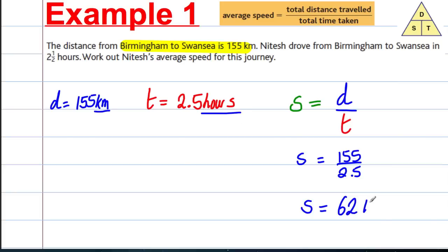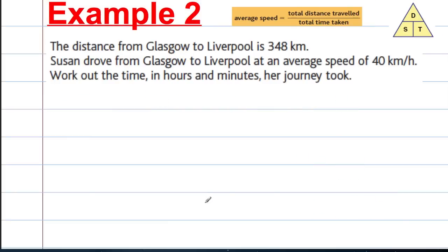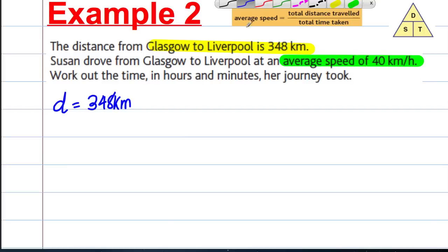Example 2. The distance from Glasgow to Liverpool is 348 kilometers, so I'm going to write that D equals 348 kilometers. Susan drove from Glasgow to Liverpool at an average speed of 40 kilometers per hour, so this time we're told the speed equals 40 kilometers per hour. Work out the time in hours and minutes - this is important.